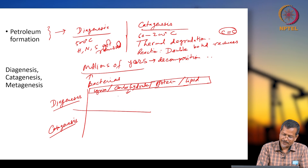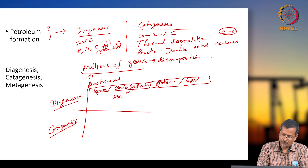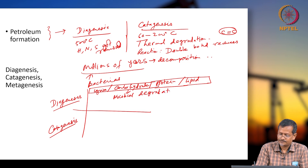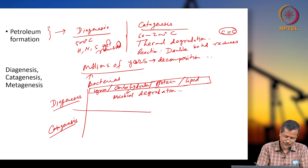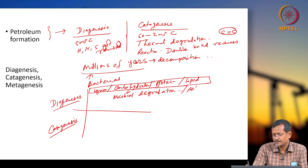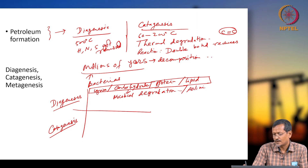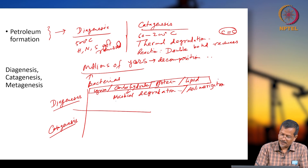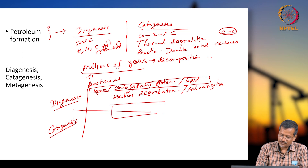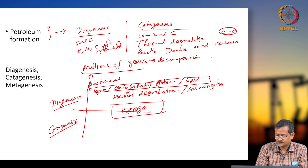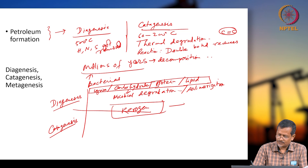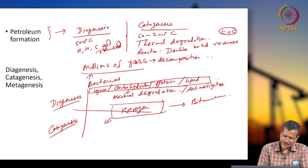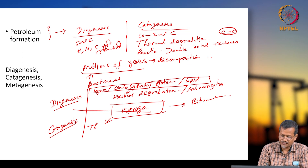Then microbial degradation will be happening, followed by polymerization, and then you are reaching kerogen. At that time you are also getting bitumen. From kerogen, thermal degradation and catagenesis are happening.